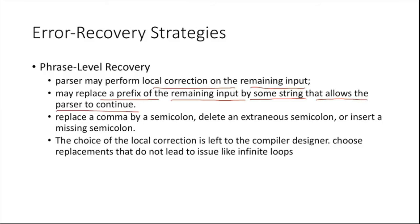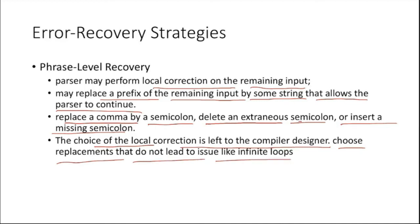In phrase-level recovery, the parser may perform local correction on the remaining input — replacing a prefix of the remaining input with a string that allows the parser to continue. For example, replacing a comma with a semicolon, deleting an extraneous semicolon, or inserting a missing semicolon. The choice of local correction is left to the compiler designer, who must choose replacements that do not lead to infinite loops or other problems such as wrong output, unexpected errors, or bugs.